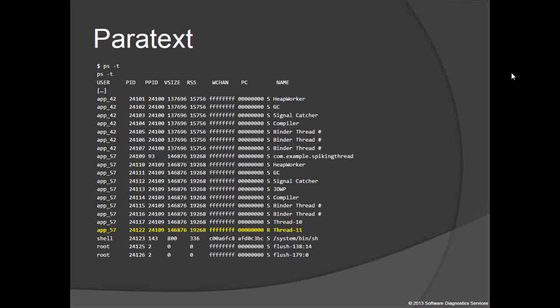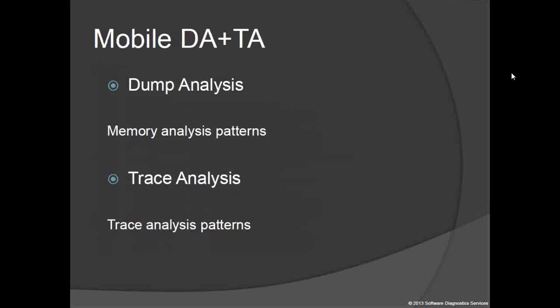For example, on this slide we see an indication of a running thread that helps with diagnosing the spiking thread memory analysis pattern, coming from Android Debug Bridge. We can see thread 11 is running from process up 57.